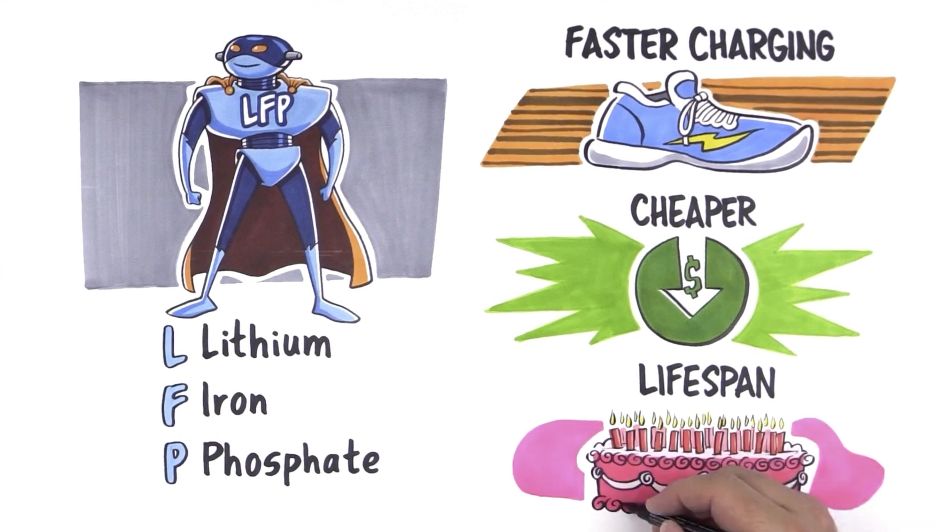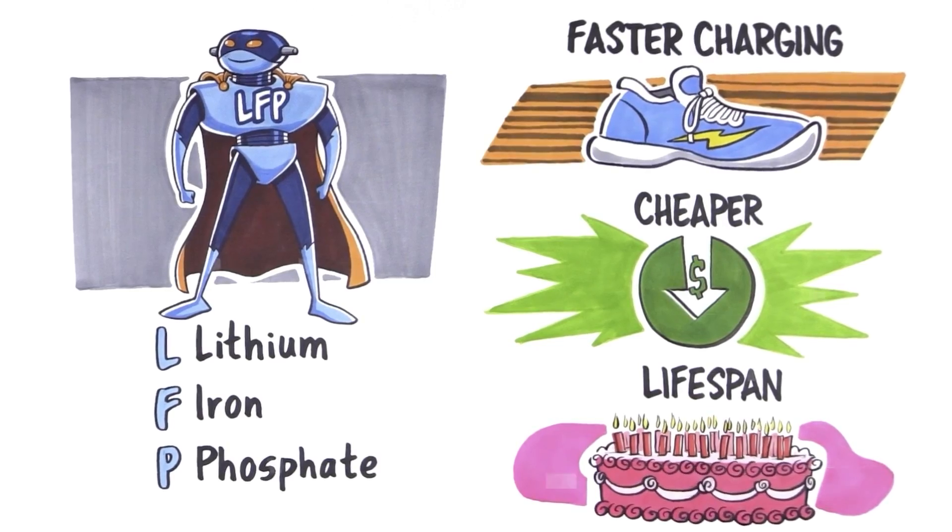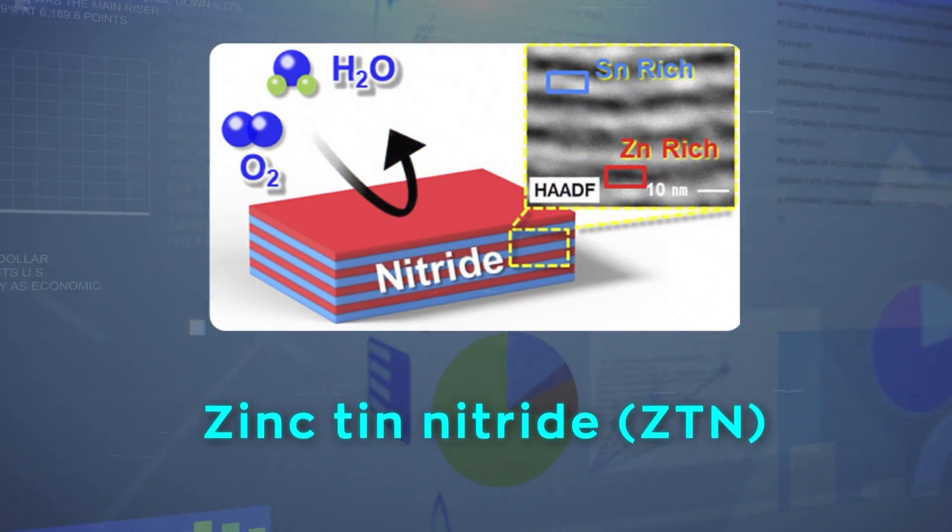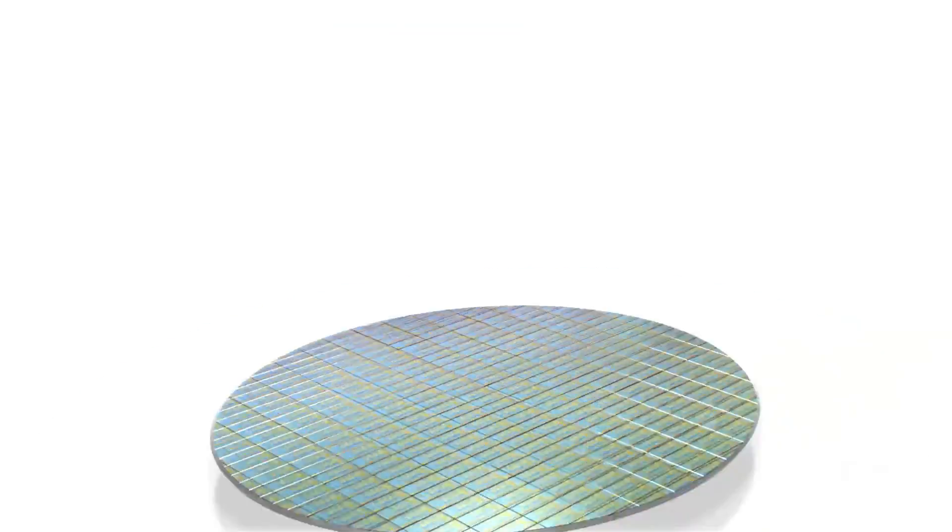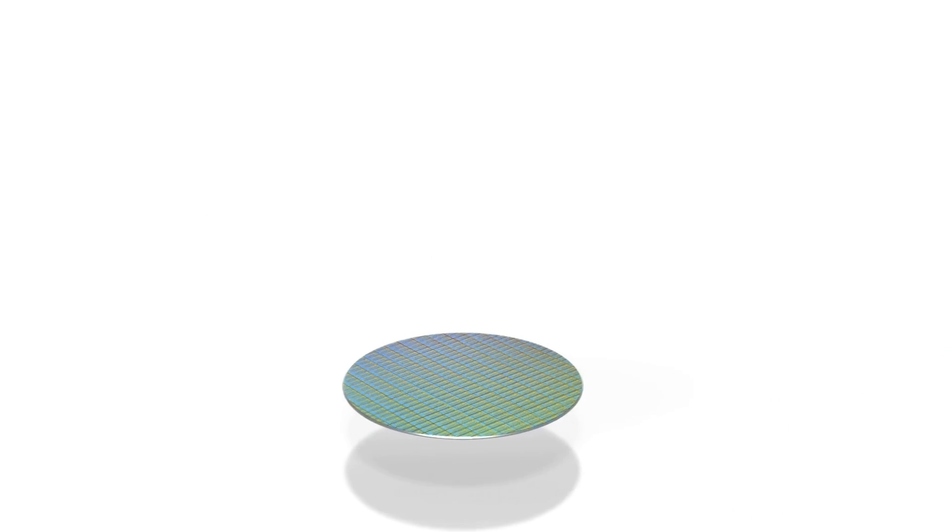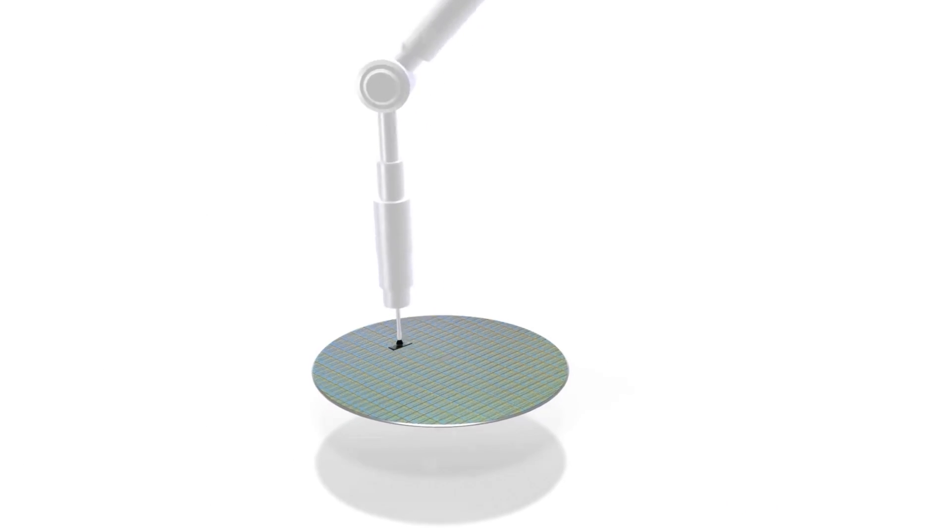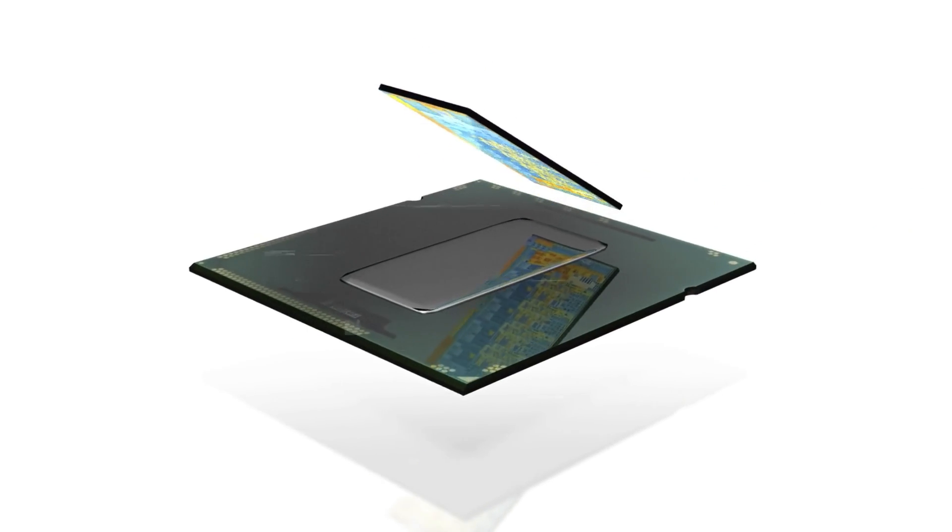Zinc tin nitride (ZTN) could revolutionize transistor manufacturing for computer chips. It conducts electricity quickly and switches efficiently between on and off states. GNoME's predictions about its structural stability and low decomposition were also confirmed in the lab.